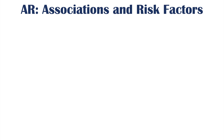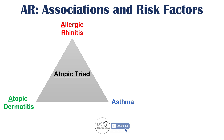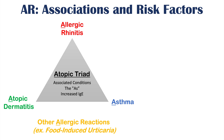One major association with allergic rhinitis is the atopic triad, which consists of allergic rhinitis, atopic dermatitis, and asthma — all starting with the letter A. They are all conditions involving increased immunoglobulin E or IgE. If you have one, you're more likely to have one or both of the others. Additionally, you're also more at risk for certain other allergic reactions, such as food-induced urticaria.